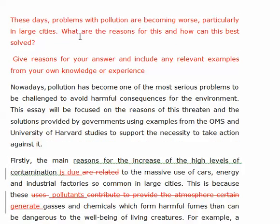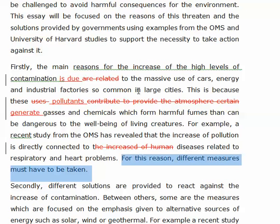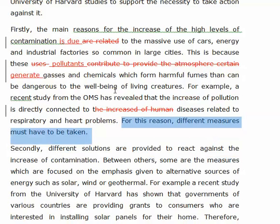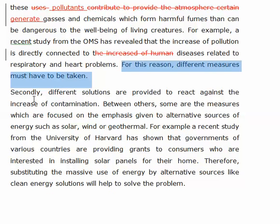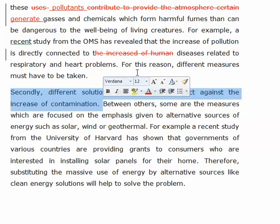Now, the question says: 'What are the reasons for this and how can this best be solved?' So maybe in your last sentence you could say something like: 'Therefore, if we want to solve this problem, governments need to introduce stricter laws to regulate industries and decrease dangerous gases and chemicals that are emitted by factories.' Something like that. Secondly, instead of 'different solutions are provided,' you can say: 'Secondly, there are a number of ways to diminish this contact.'